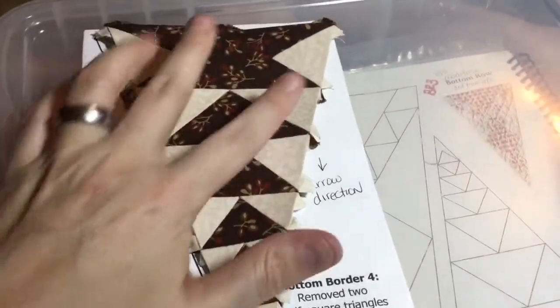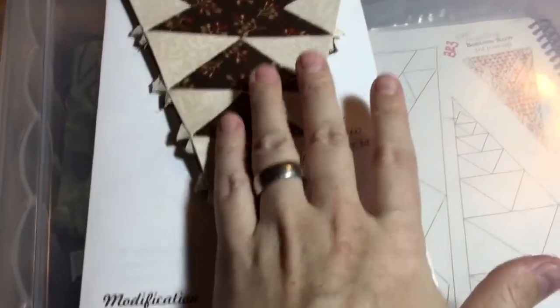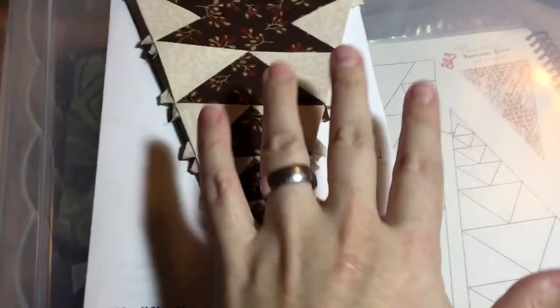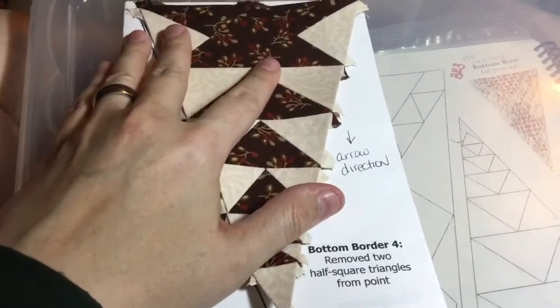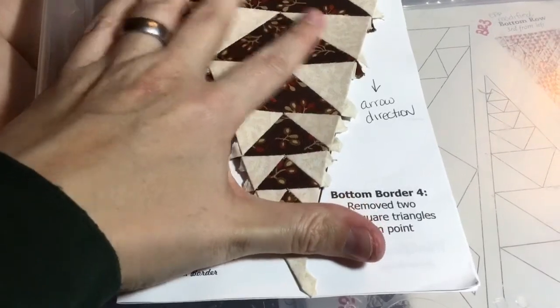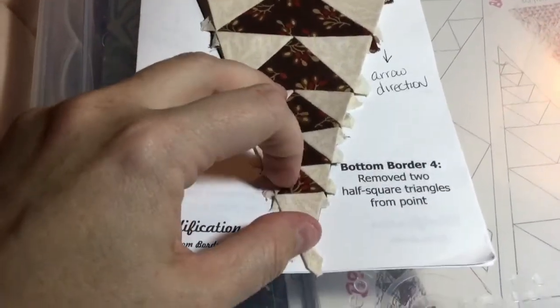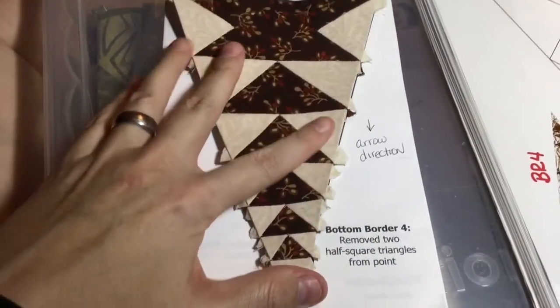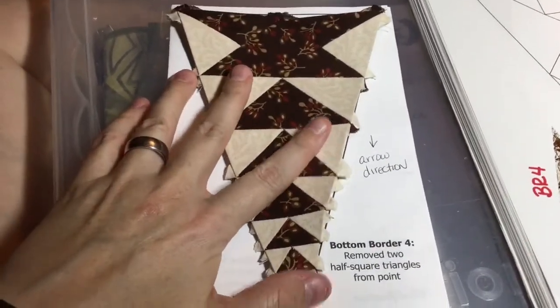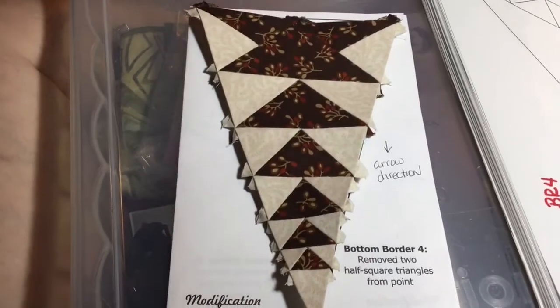It still came out a bit off, but I will be able to finagle it, and it will go in to its spot, knock on wood. If not, then I can mess with it. They grow with each seam and move with each seam, so we're going to see what happens on assembly. But I'm going to call this bottom border triangle number four complete.